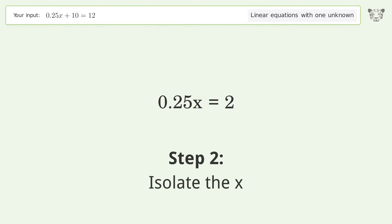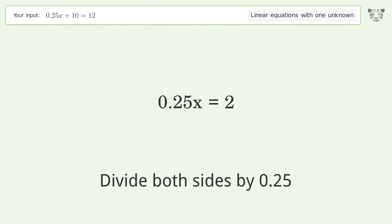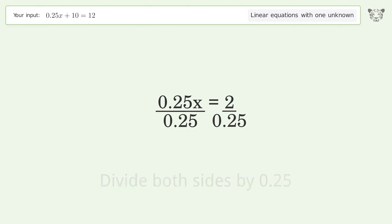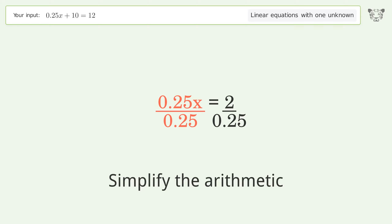Isolate x by dividing both sides by 0.25, then simplify the arithmetic.